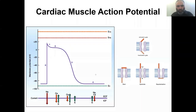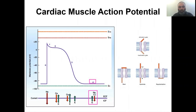Phase four is the resting membrane potential, where everything balances out. Even here, it takes both sodium and calcium leak currents to balance out the potassium efflux, because there are more leaky channels for potassium than for sodium and calcium. This completes the cardiac action potential segment.